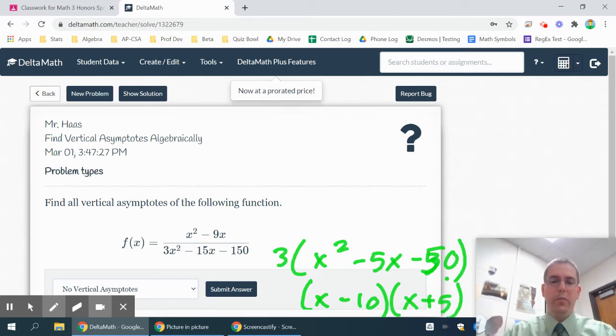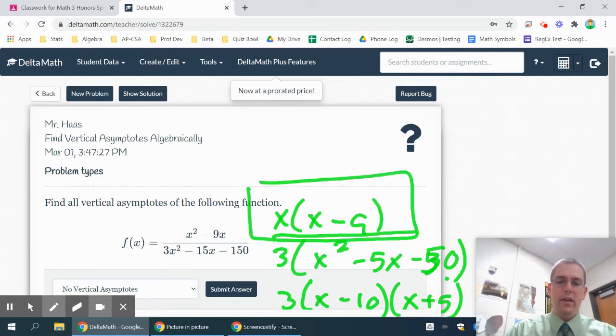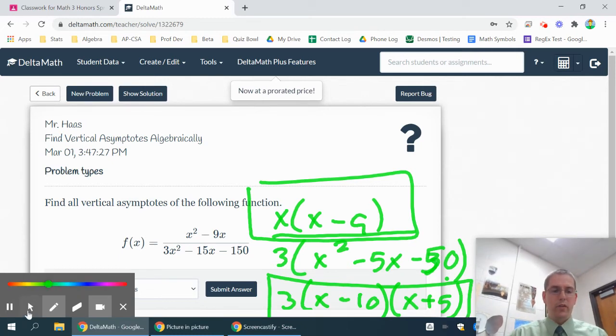That makes me think there's probably going to be two vertical asymptotes. Just to be sure, we need to factor the numerator because something could cancel out. When I take out an x, I have an x minus 9. So when I compare this and this, there is nothing that will cancel. So both of those are vertical asymptotes.